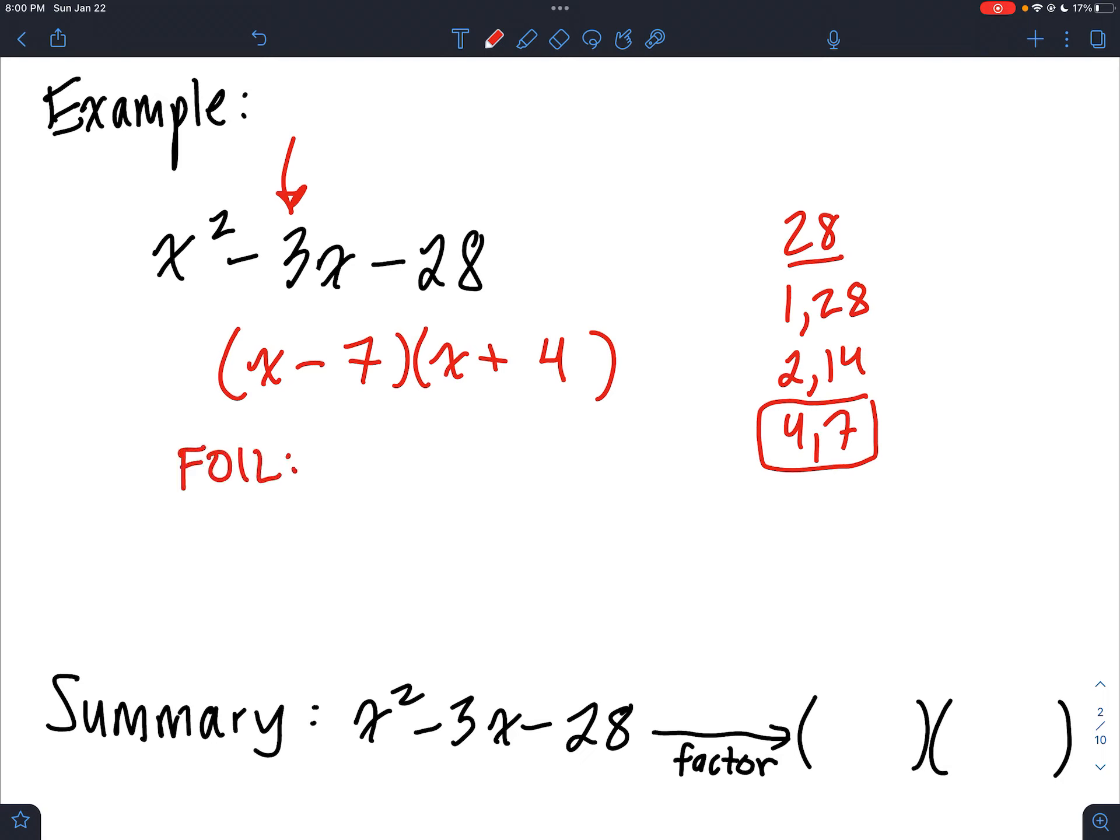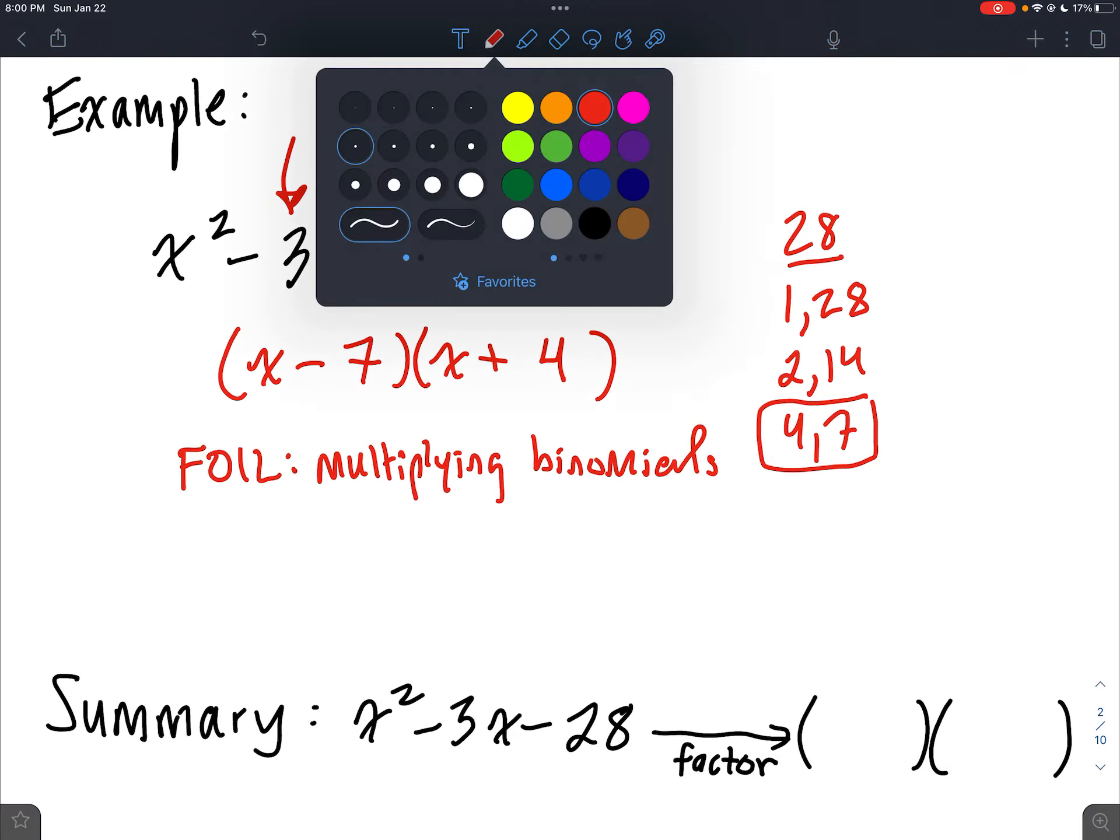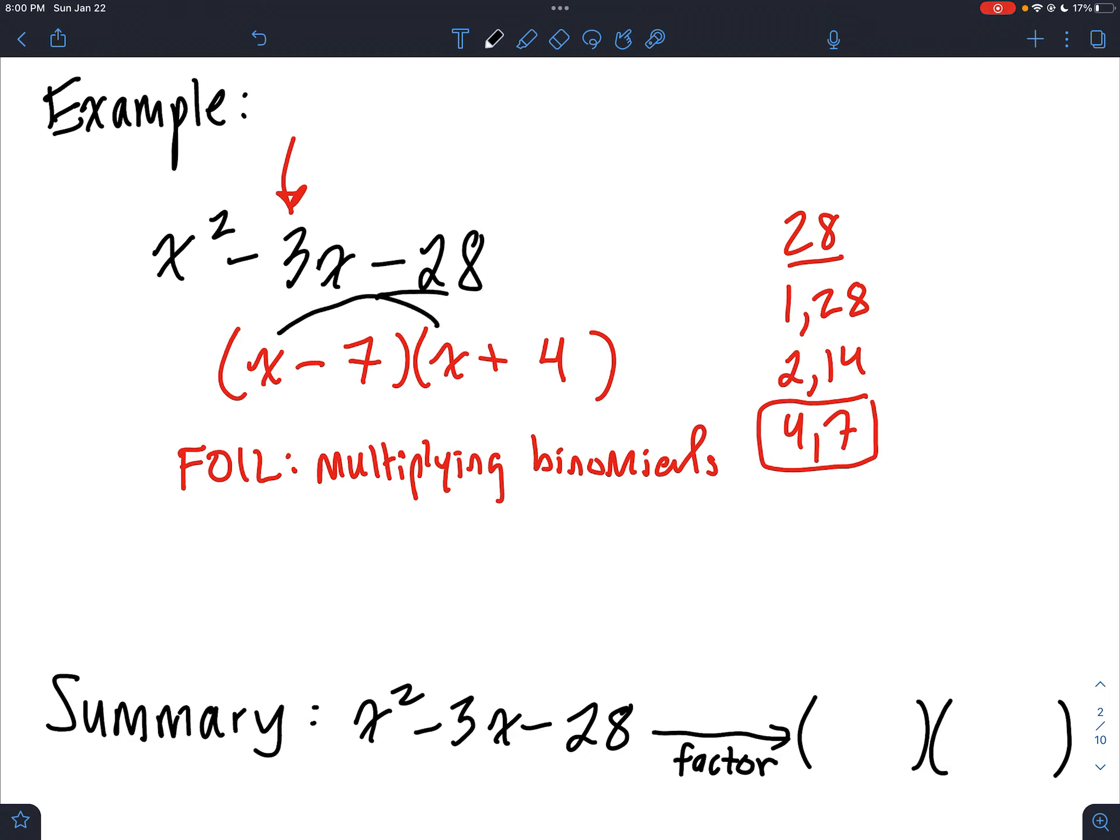But I want you to see something. So FOIL, remember, is a way of multiplying binomials. It's an acronym that we've made for it. And honestly, it might be more memorable for you just to see the little arrows that we use to multiply. And that's actually how you can check your answer for these. And it's where we get all the guidance. So see what happens. We get x times x, 4 times x, minus 7x, minus 28. And if you haven't already, take a look at my multiplying polynomials video.